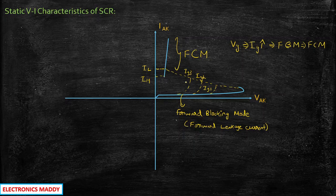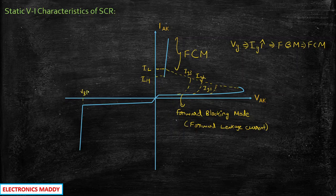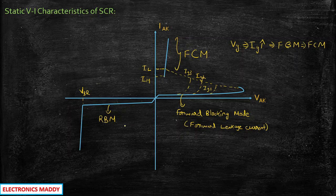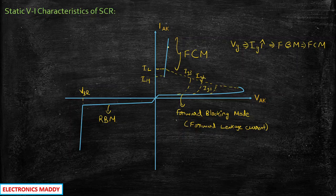In the reverse region, the characteristics are similar to a normal diode — current increases slightly until beyond a certain breakdown voltage VBR (or VBO in reverse), where the current abruptly increases to a very large value and the device is damaged. This region is called the reverse blocking region. This completes the static VI characteristics of SCR, derived directly from its modes of operation. For any questions, feel free to type in the comment section below. Thanks for watching.